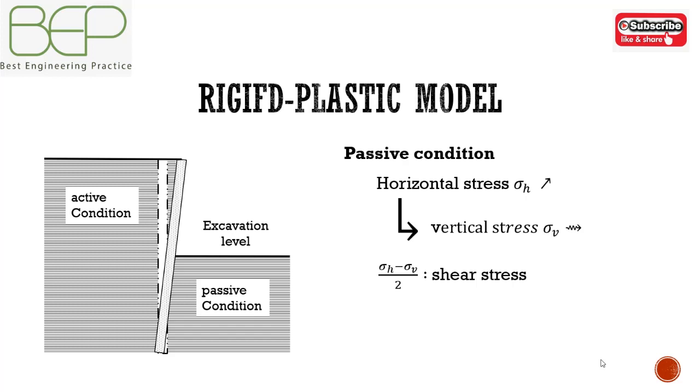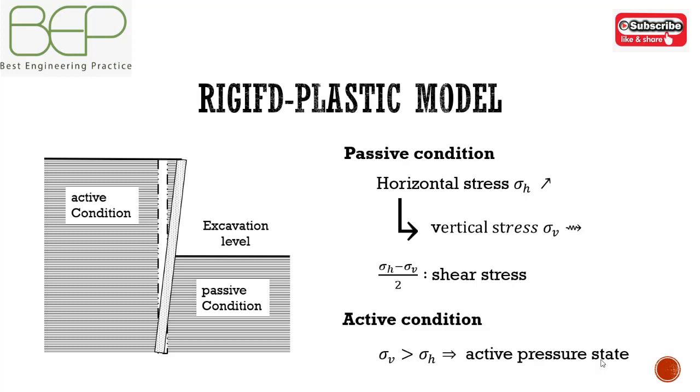Soil rupture with the condition where vertical stress is greater than the horizontal stress is known as the active pressure state of the soil.